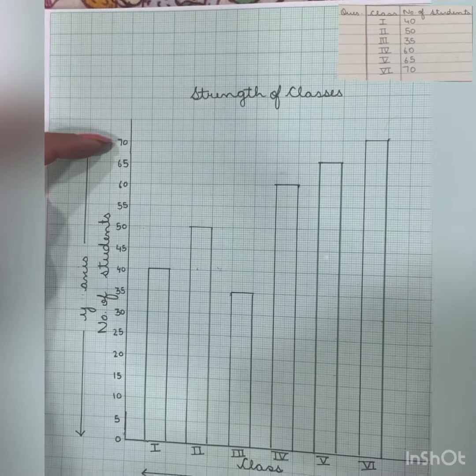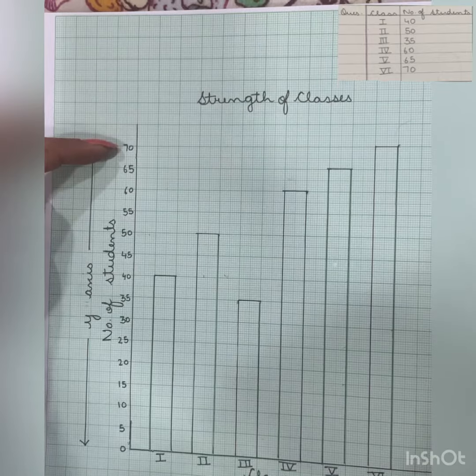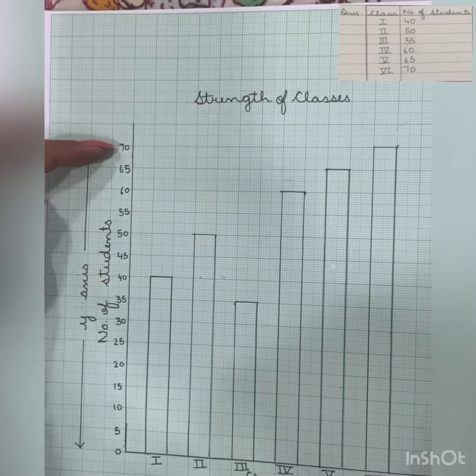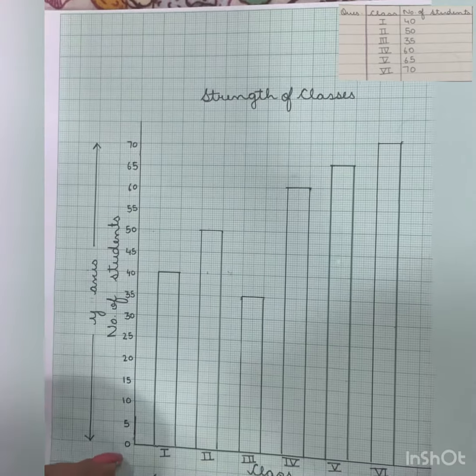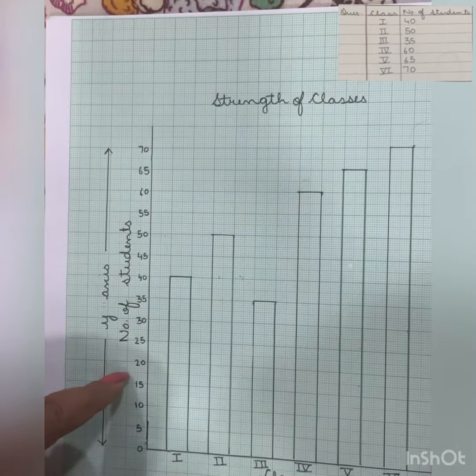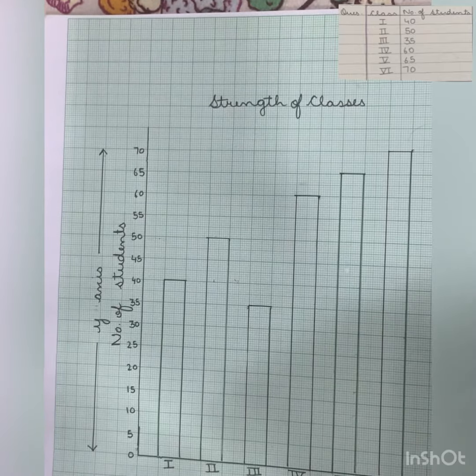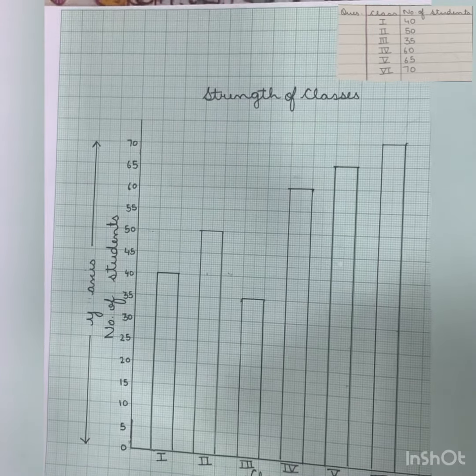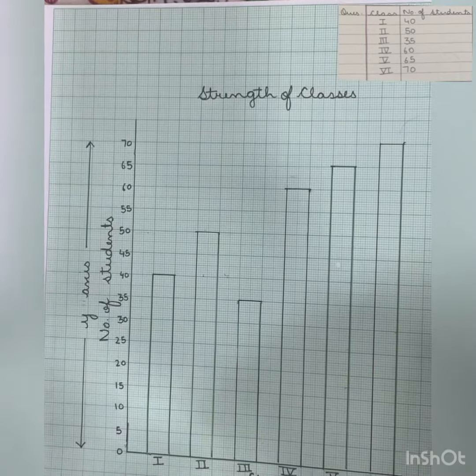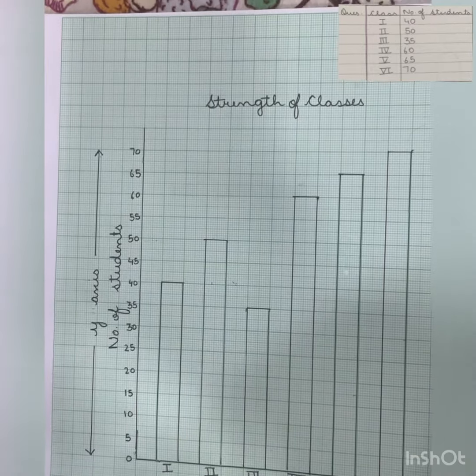So we can't draw it till 70 as it will require much space. So we have taken our intervals from 0 to 5, 5 to 10, 10 to 15, 15 to 20. It all depends on our data. As in this example we have multiples of 5, so I have taken gap of 5 in each. Is it clear?